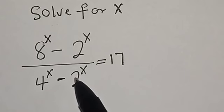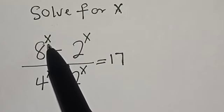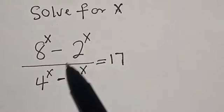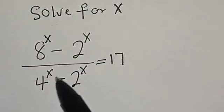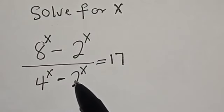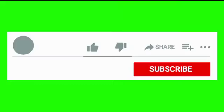Welcome to Math G's class. In this class, we want to find the value of s from this exponential equation: 8 raised to power s minus 2 raised to power s, divided by 4 raised to power s minus 2 raised to power s, is equal to 70.